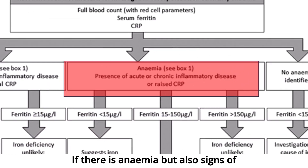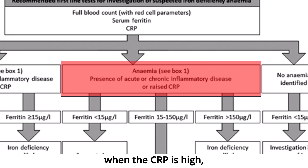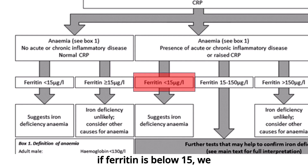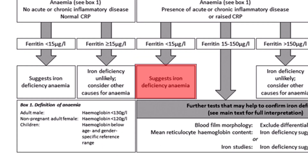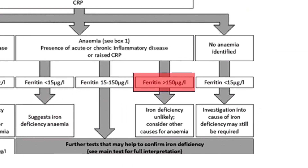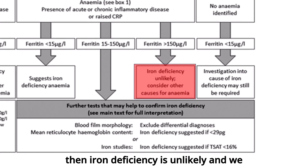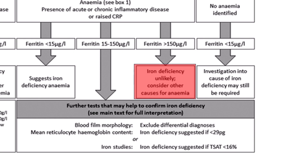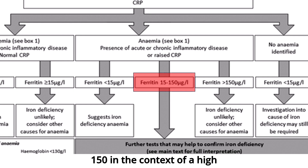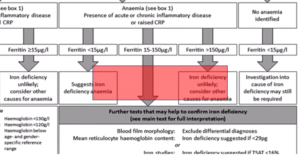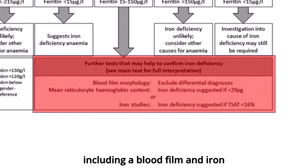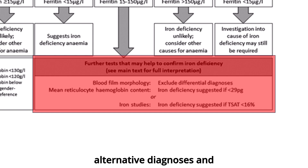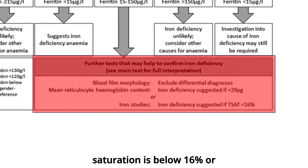If there is anaemia but also signs of acute or chronic inflammation — that is when the CRP is high — if ferritin is below 15, we should regard this as iron deficiency anaemia. If ferritin is higher than 150, iron deficiency is unlikely and we should consider other causes. But if ferritin is between 15 and 150 in the context of a high CRP, then further tests will be required, including a blood film and iron studies. I'm more likely to consider a diagnosis of iron deficiency anaemia if transferrin saturation is below 16% or mean reticulocyte haemoglobin content is less than 29 picograms.